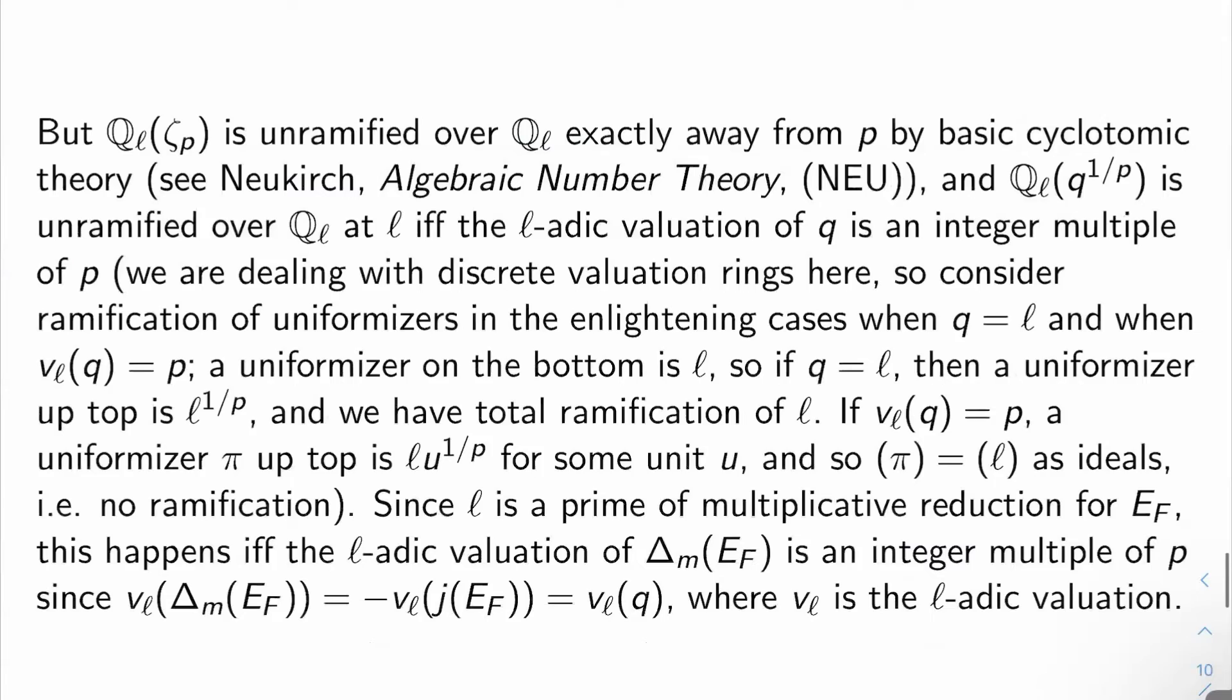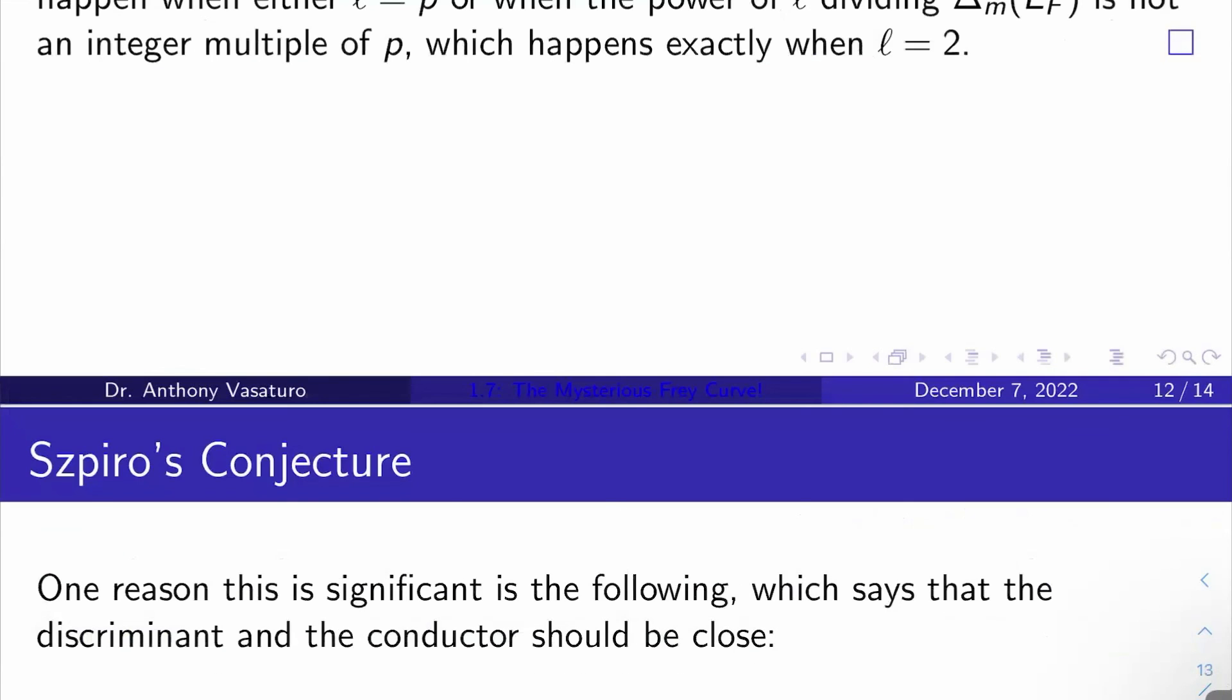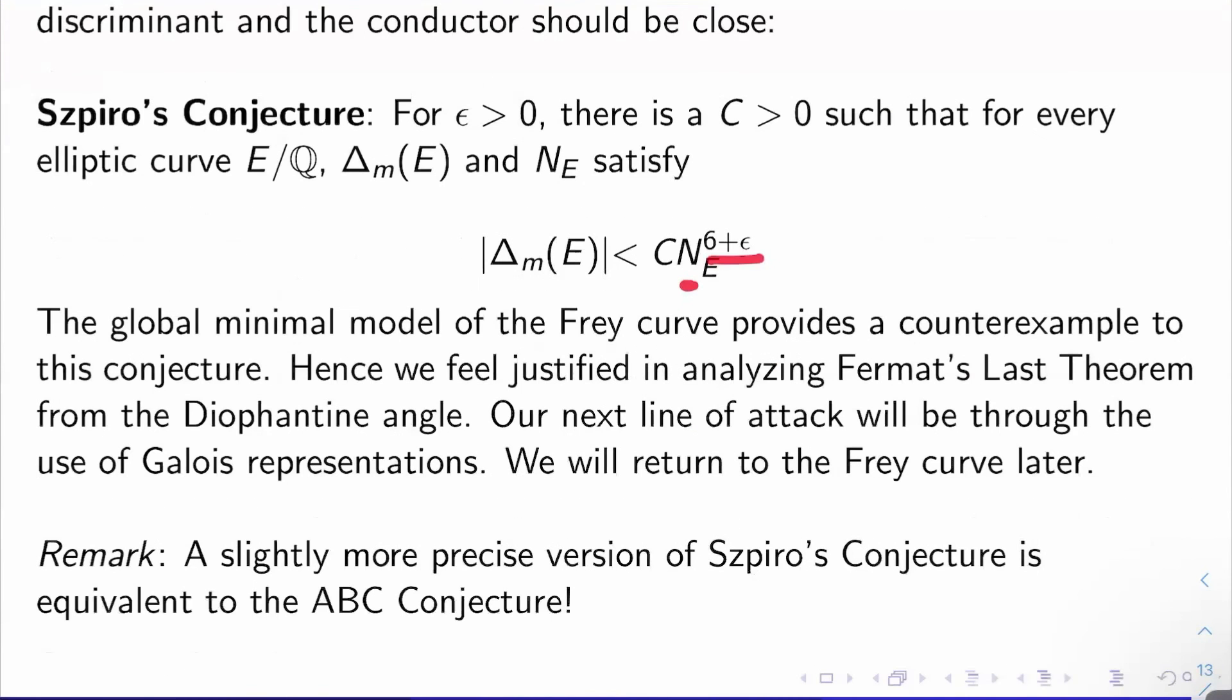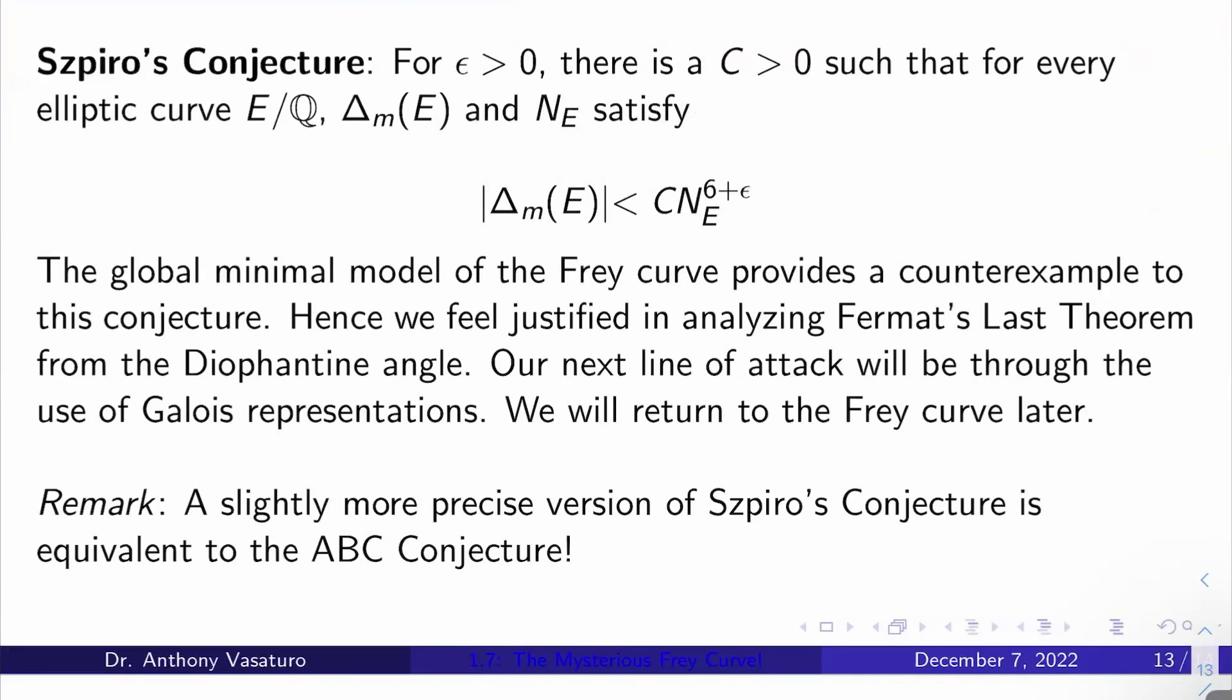Now, who cares? One reason this is significant is the following. The discriminant and the conductor should be close in general. In fact, they should be very tightly connected. So, we have this Szpiro's conjecture that says, for ε positive, there is a c positive such that for every elliptic curve E over Q at once, so c is independent of E. The minimal discriminant of E and the conductor of E satisfy this inequality. The minimal discriminant of E in absolute value is less than c times the conductor to the (6 + ε) power, and it turns out the global minimal model of the Frey curve provides a counterexample to this conjecture.